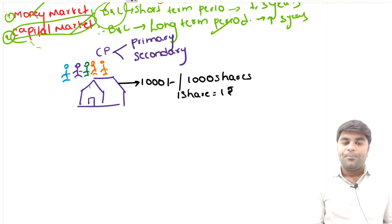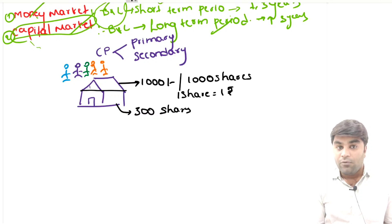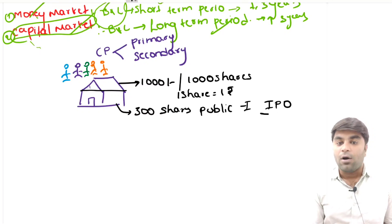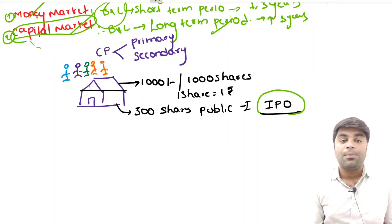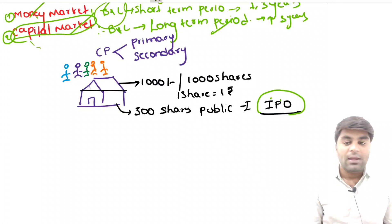If these guys want to sell their shares to the public for the first time — imagine this company has sold about 300 shares out of the thousand shares to the public for the first time — this is called Initial Public Offering. If a company sells its shares to the public for the first time, it is called Initial Public Offering: 'initial' means for the first time, 'public' means people like you and me, 'offering' means offering their shares.